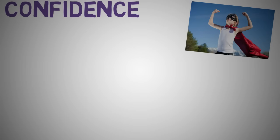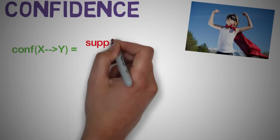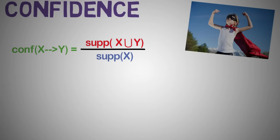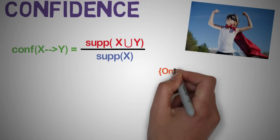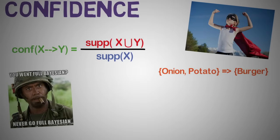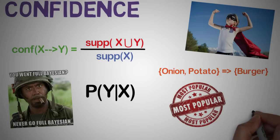Confidence of a rule is defined as: confidence of X → Y equals the support of X union Y over the support of X. It signifies the likelihood of item Y being purchased when item X is purchased — for example, given onions and potatoes, what is the likelihood of burgers being bought? You may sense some Bayesian theory here — you would be correct to interpret this as conditional probability, i.e., the probability of finding item set Y in transactions given the transactions already contain X. However, confidence has a major drawback: it only takes into account the popularity of item set X and not the popularity of Y.